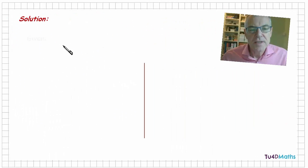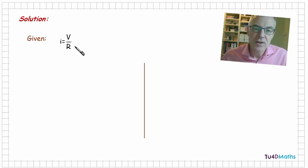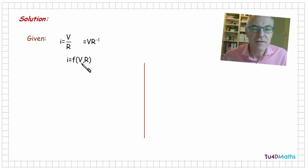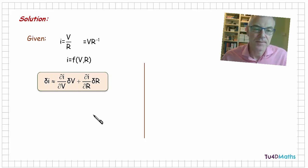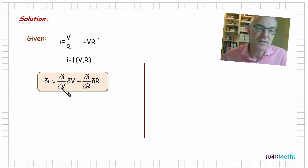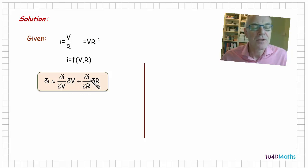So we're told that the current is equal to the voltage divided by the resistance, which we could also write as v times r to the power of minus 1. So in other words, the current is a function of the voltage and the resistance. As before, we can write that the approximate change in the current is equal to the rate of change of the current with respect to the voltage times the small change in voltage, plus the rate of change of the current with respect to the resistance times the small change in resistance.